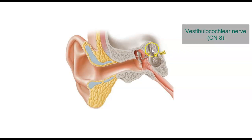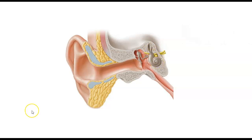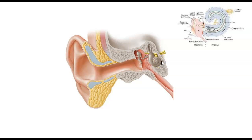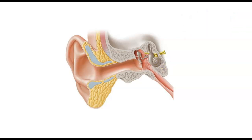The vestibulocochlear nerve goes to the brain and regulates the balance and hearing components of the cochlea. The cochlea is composed of three fluid-filled chambers extending the length of the structure. The two outer chambers are filled with fluid called perilymph, which acts as a cushioning agent for the delicate structures in the center chamber. The perilymph is connected to the cerebrospinal fluid surrounding the brain and spinal column. The center chamber, called the cochlear duct, secretes a fluid called endolymph. Inside the cochlear duct is an important structure called the organ of Corti, a sensory organ essential to hearing.